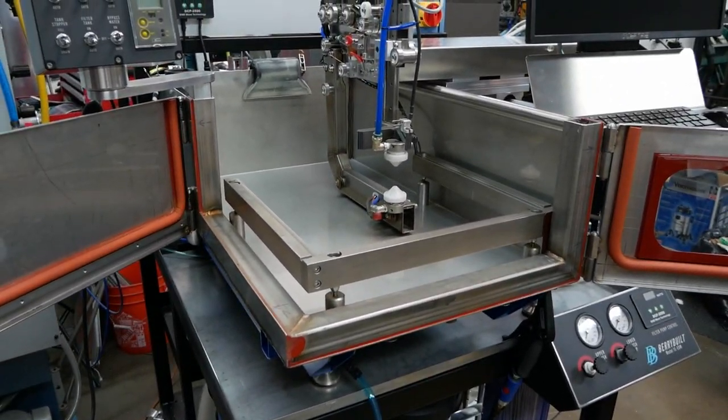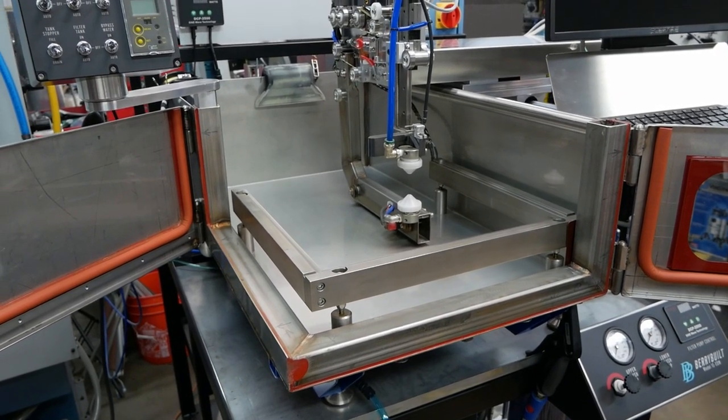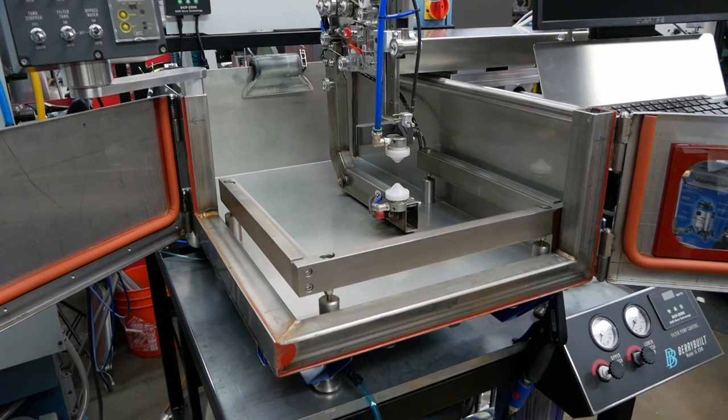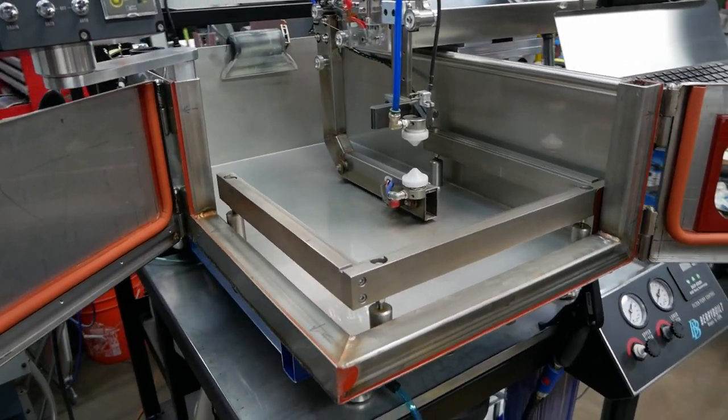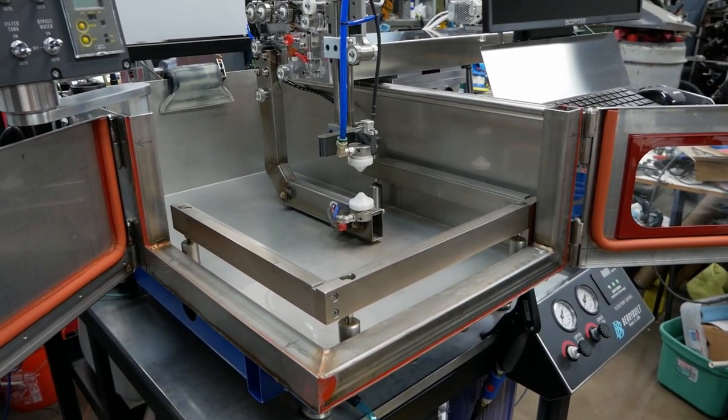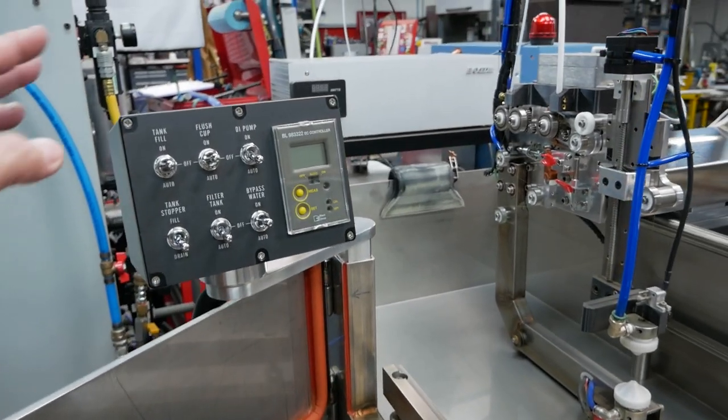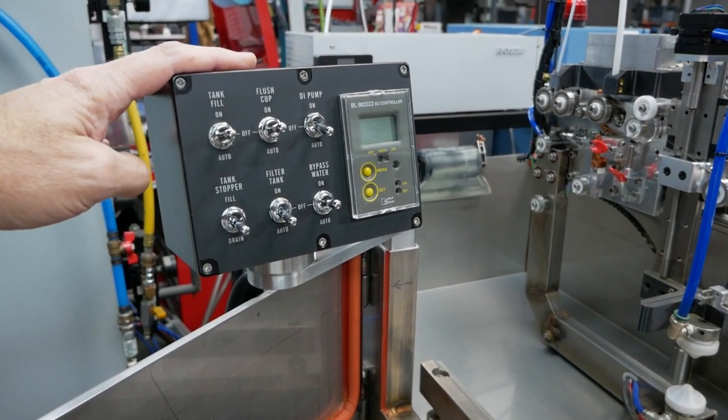I may as well start with the tank. The tank is roughly 20 gallons when it's totally full. Normally, it's only holding somewhere around 15 gallons. I very rarely run it all the way up to the top unless I'm doing like a four-inch cut. I made reference to this. This is the water control panel.